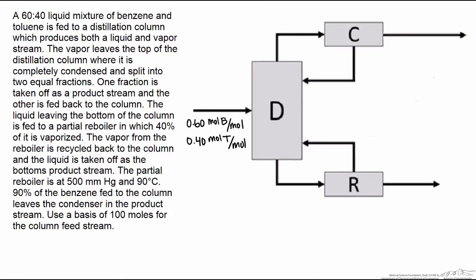So this partial reboiler is at 500 mm of mercury and 90 degrees C. 90% of the benzene fed to the column leaves the condenser in the product stream. And that's another piece of information that we're going to use later to solve for this problem. And we're going to use a basis of 100 moles fed to the distillation column.